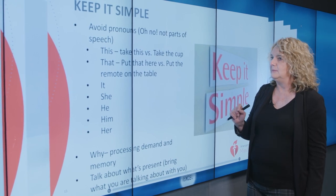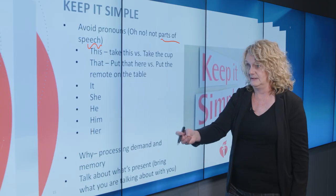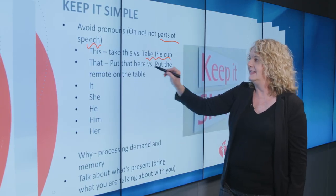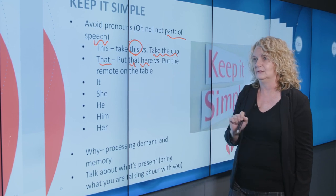Another idea in keeping it simple is to avoid pronouns. A pronoun refers to something mentioned before — so using the word 'this,' for example: say 'take the cup' rather than 'take this.' 'This' is very abstract. Another example: 'put that here' has two abstract terms — what's 'that' and what's 'here'? Instead say 'put the remote on the table.' We want to be as concrete as we can and eliminate those pronouns. Examples of pronouns to eliminate: it, she, he, him, her.